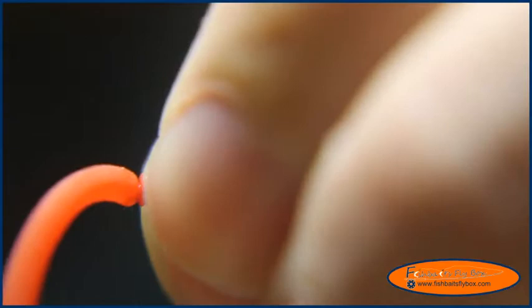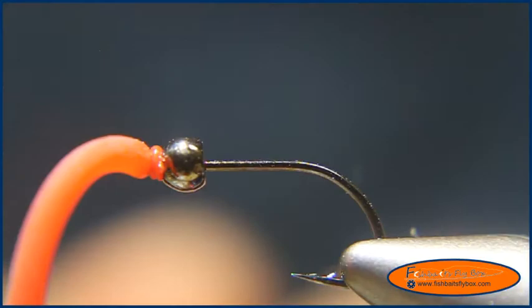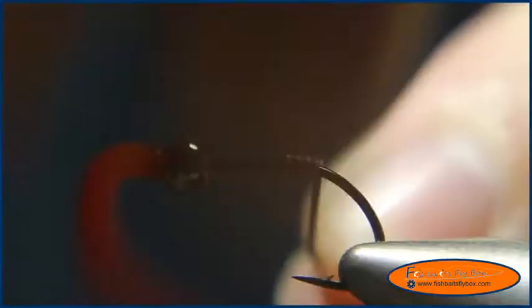And then I'm going to take the bead and bring that up. And you might have to fish it a little bit to get it to where you want it. That'll work. And then I'm going to take some lead wire. I'm going to tie a dozen wraps of lead wire around the hook shank.